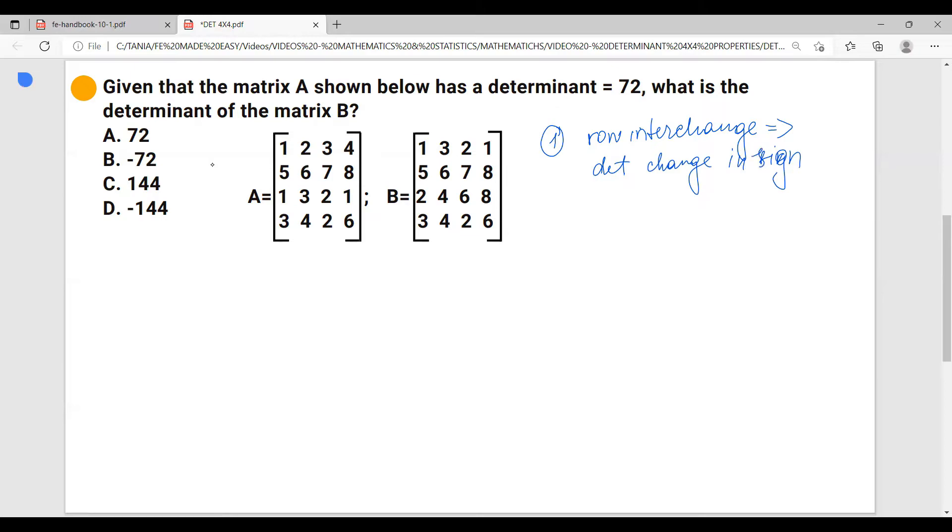So once you know this rule that if you interchange rows within two matrices, you know that your determinant is going to be negative. So right off from the beginning you eliminate A and C.